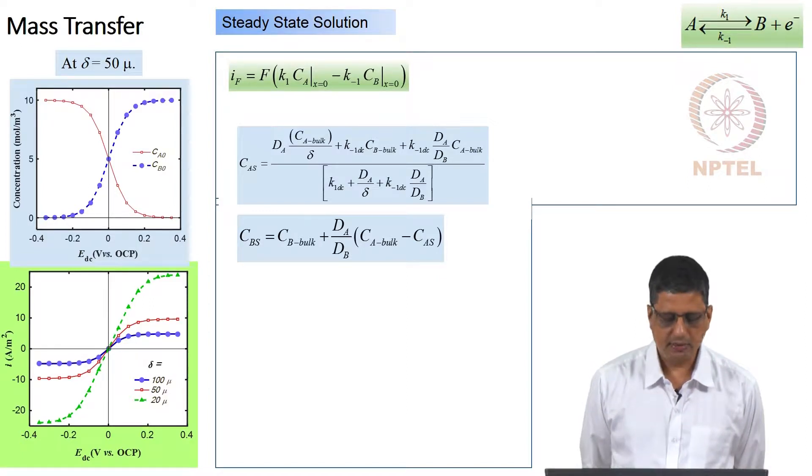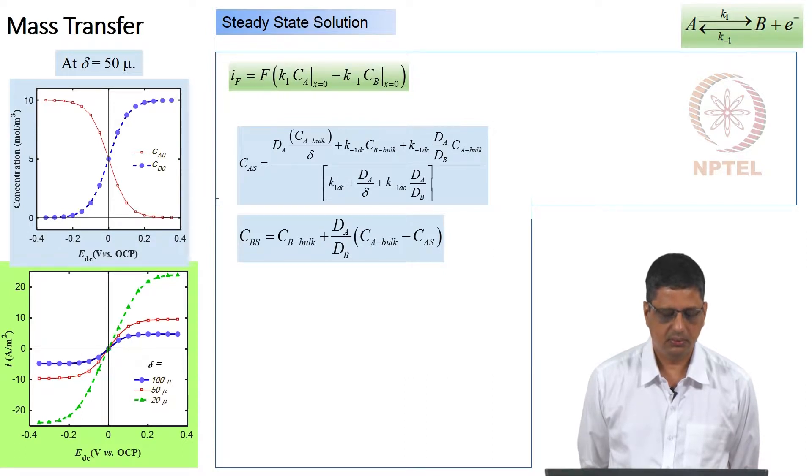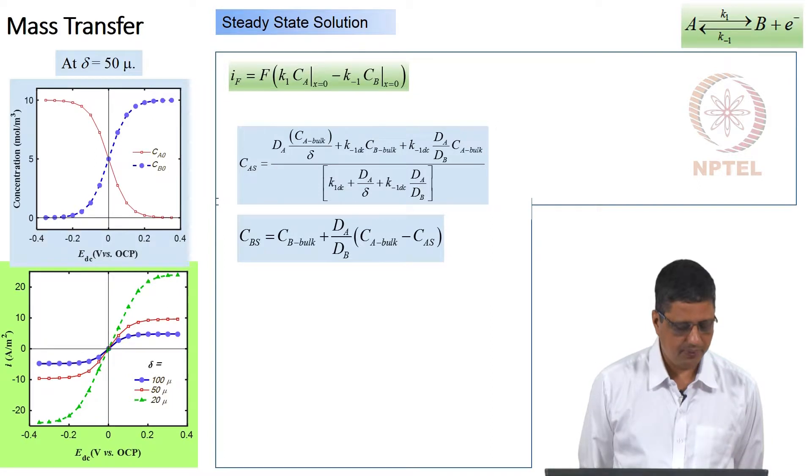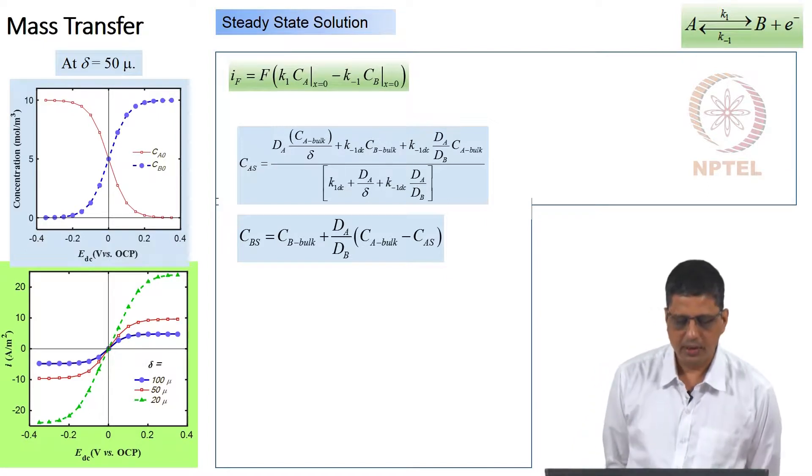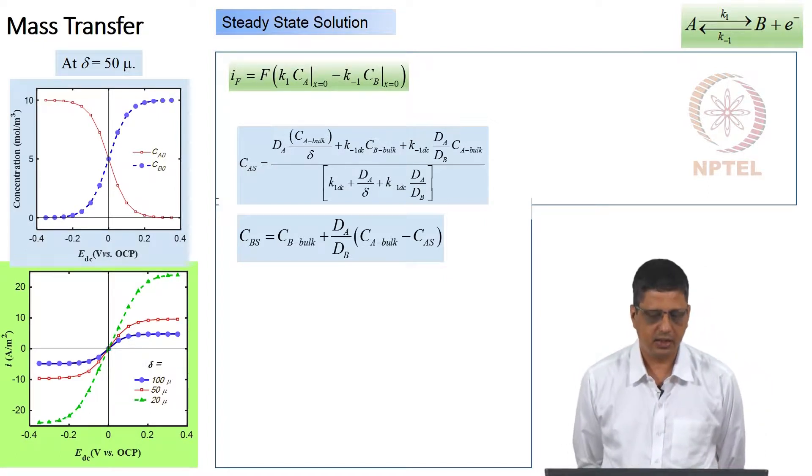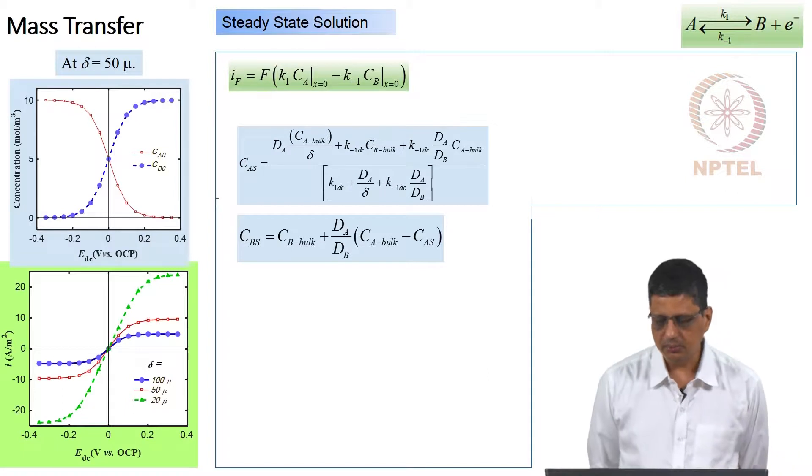We have solved this Fick's equation for steady state condition. We have got the electrochemical current, Faraday current, and we have predicted the concentration as a function of DC potential. We have predicted the current as a function of DC potential at different rotational speeds. We have got the expression for the Faraday current, concentrations of A and B, and from these only we got these plots.